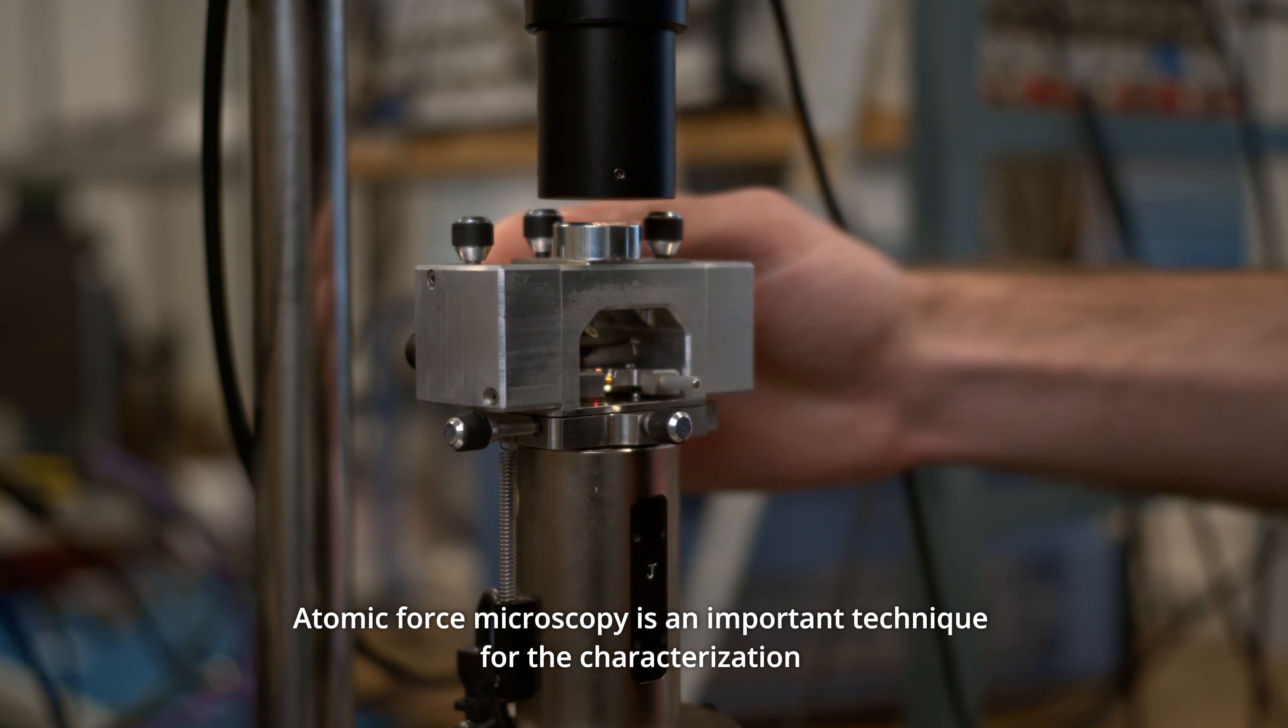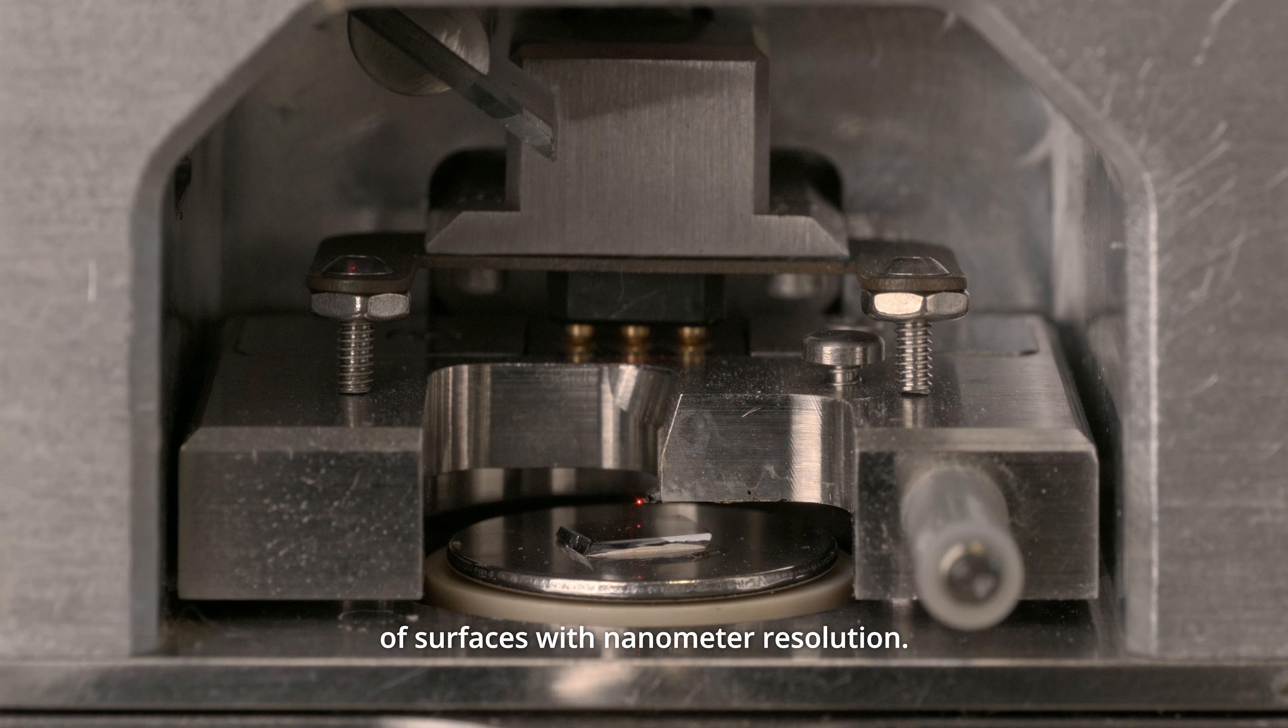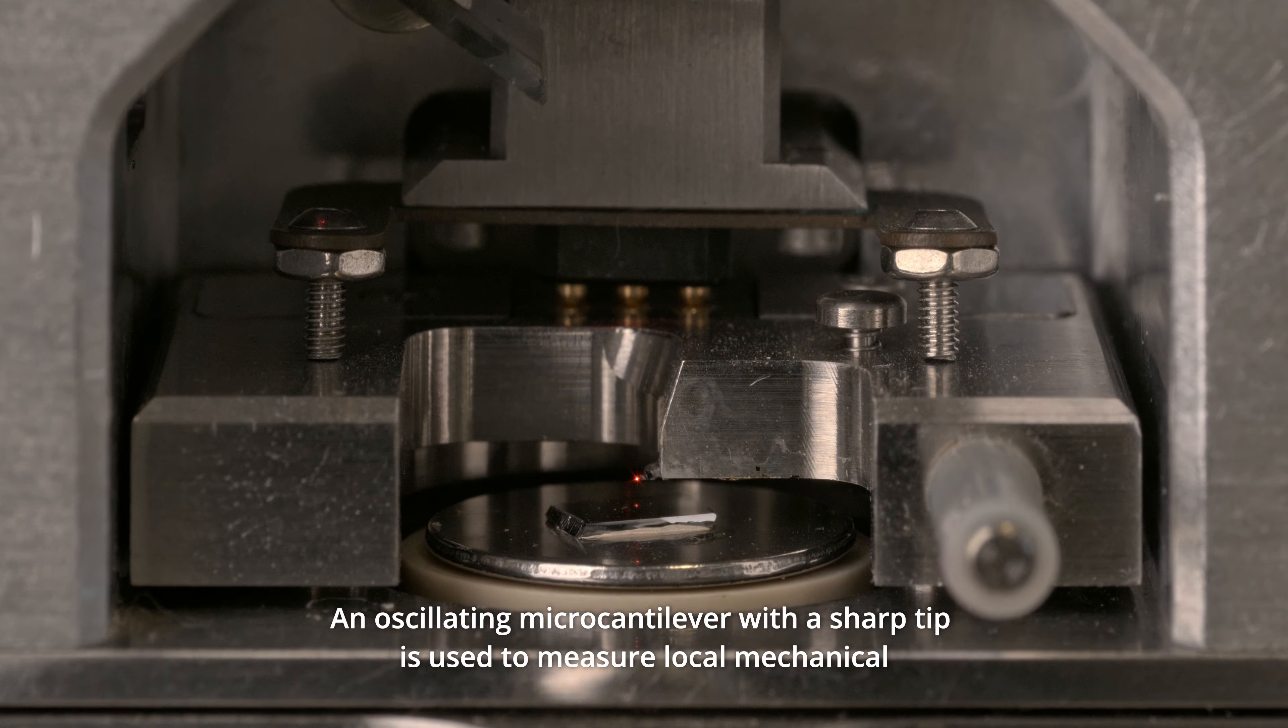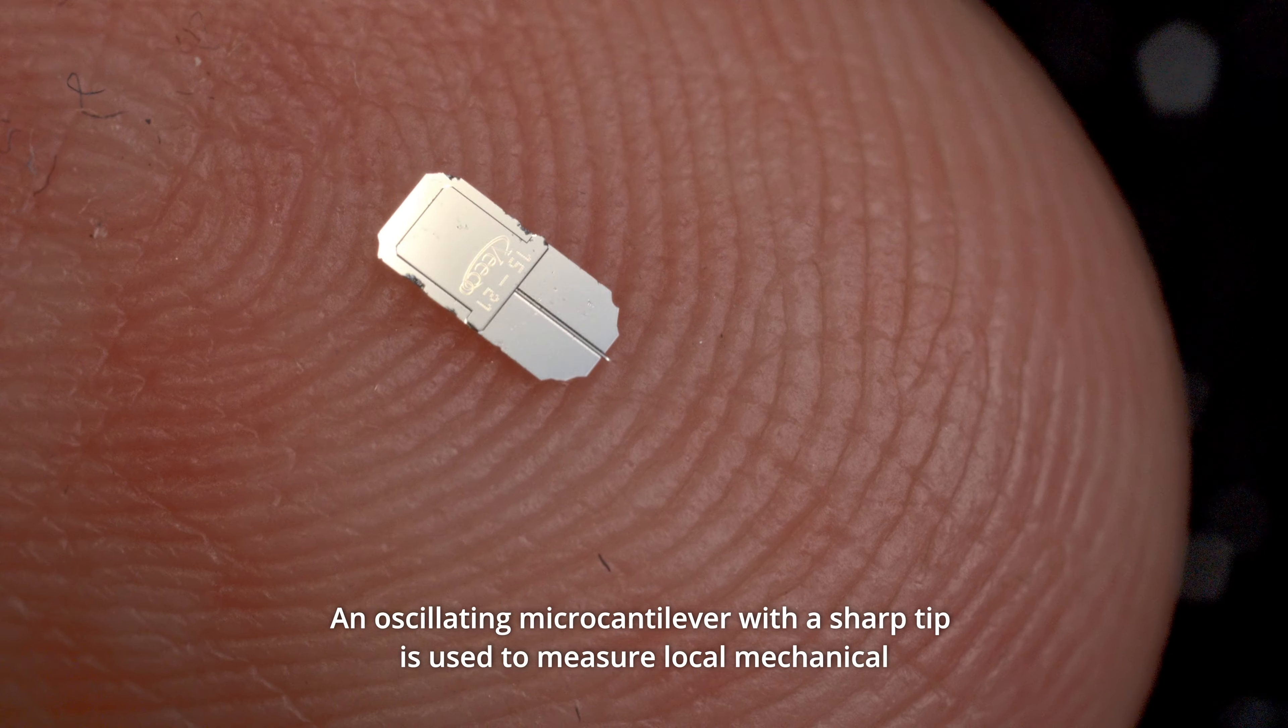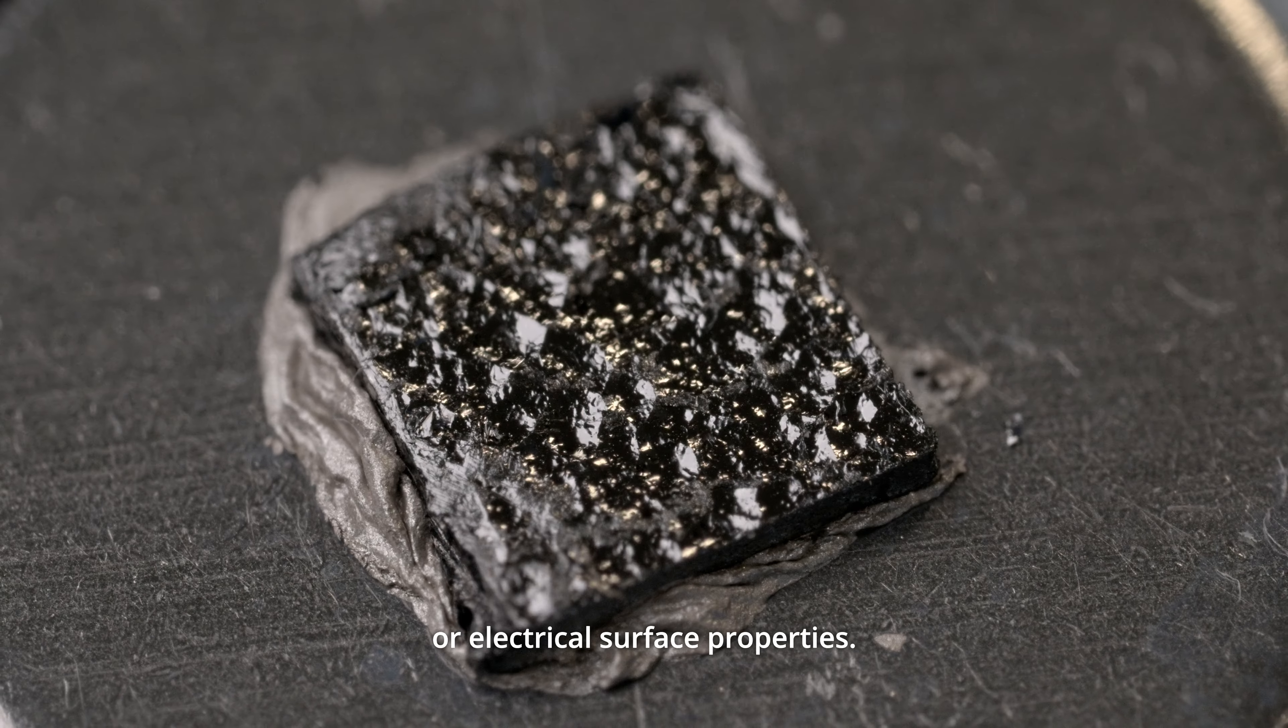Atomic force microscopy is an important technique for the characterization of surfaces with nanometer resolution. An oscillating micro cantilever with a sharp tip is used to measure local mechanical or electrical surface properties.